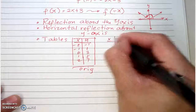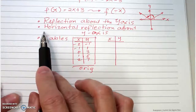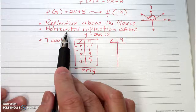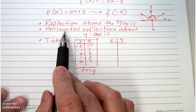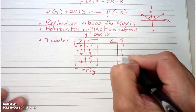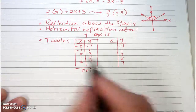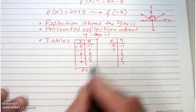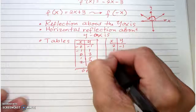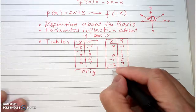To get the transformed table, look at the description: it affects the horizontal values, meaning the domain is affected. All y-values stay the same — negative one, one, three, five, and seven — but the domain is reflected, so all negative x-values turn positive and all positive x-values turn negative. This is your transformed table.